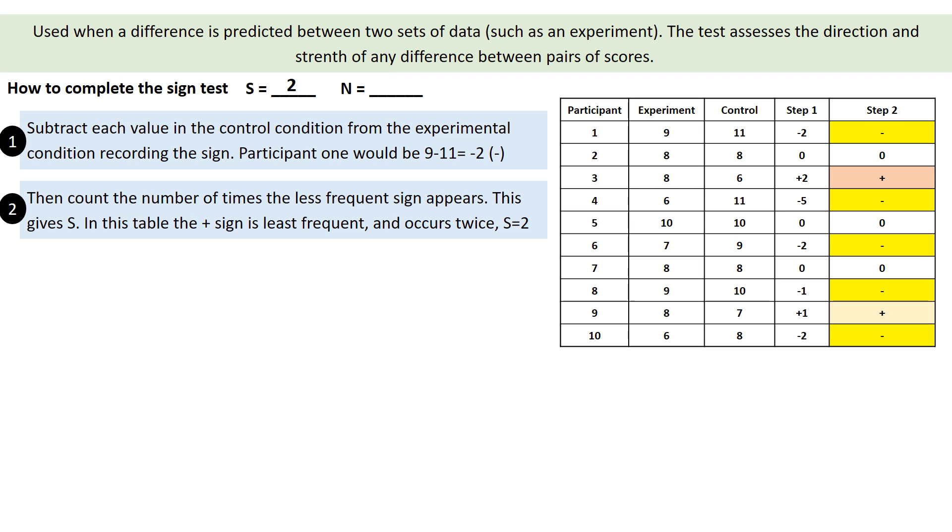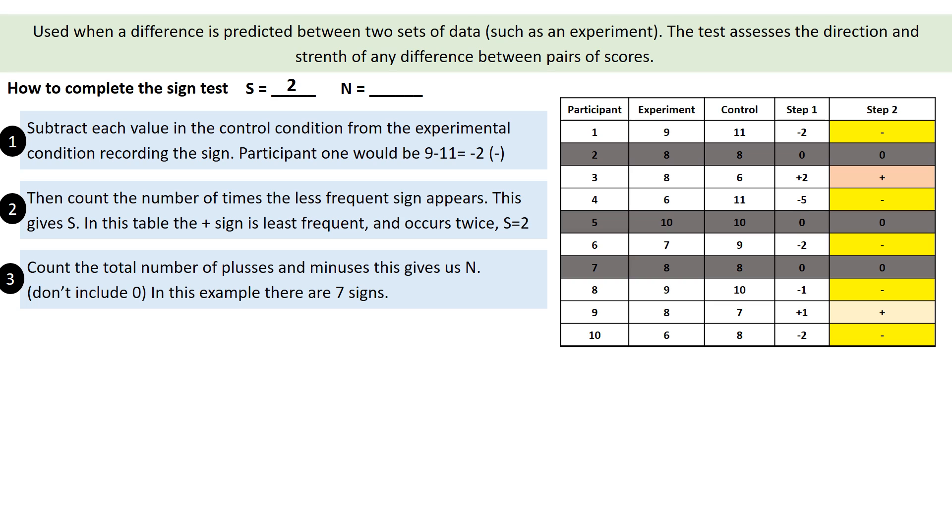Now we need to figure out what N is. Well, to figure out N, our number of participants, then we work out all the participants we saw a difference in. We're not interested in those participants who we didn't see a difference between the conditions. We can just forget about them. They are gone to us. So the remaining participants are the seven with a sign. So now we have S of two and N of seven.